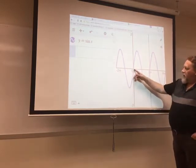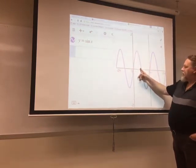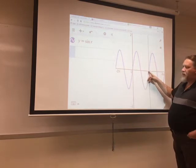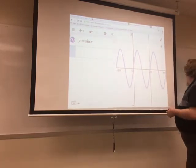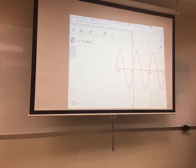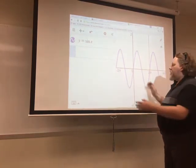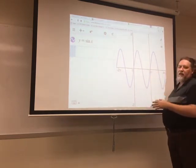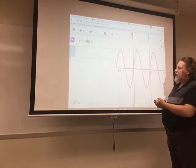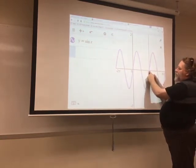Now, the time it takes me to get from the origin up to the top, down to the bottom, and back to the middle again is called a period. We could say that this graph has a period of 2 pi.